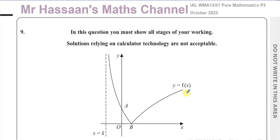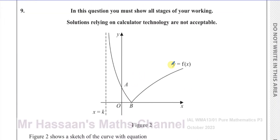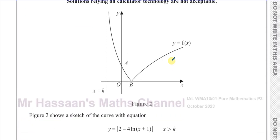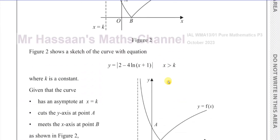On this question, we have a sketch of a curve which has the equation y equals the modulus of 2 minus 4 times ln of (x plus 1), and x is greater than k. The domain of this function is x is greater than k.